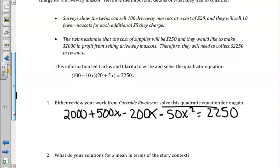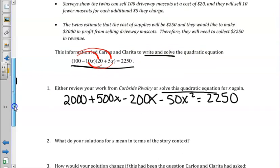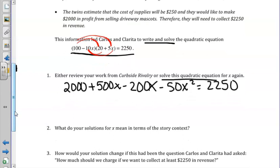Carlos and Clarita wrote and solved this equation. If you recall from our previous lesson, we did write and solve this equation there. So we'll just talk through the steps. We do have to distribute each of these values, and we will get 2000 plus 500x minus 200x minus 50x squared equals 2250.